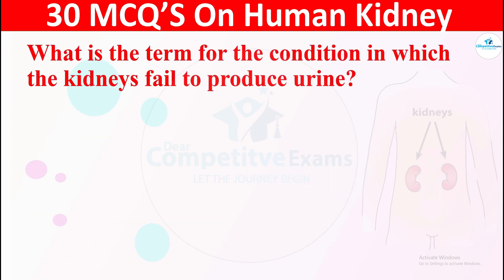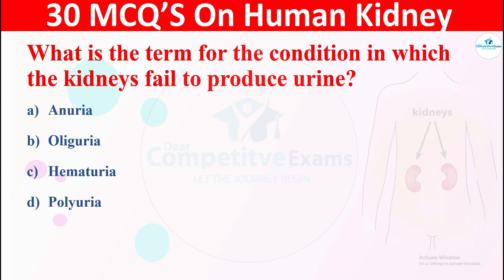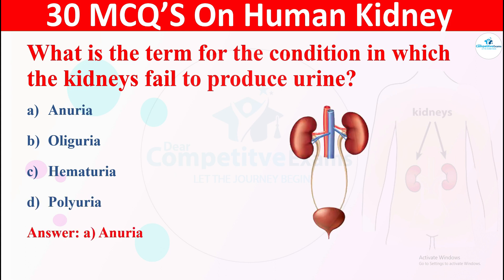Question 25: What is the term for the condition in which the kidneys fail to produce urine? The options are: A) anuria, B) oliguria, C) hematuria, or D) polyuria. The right answer is anuria. Anuria is the absence of urine production.